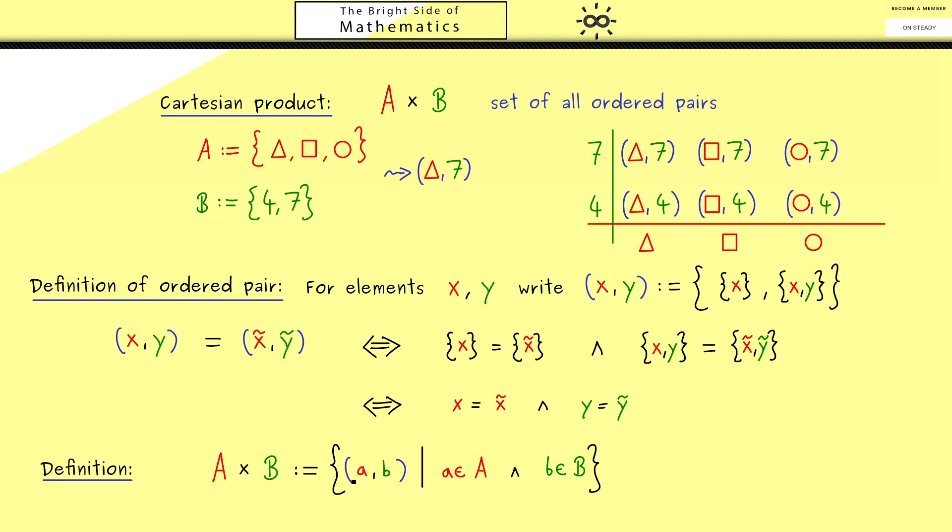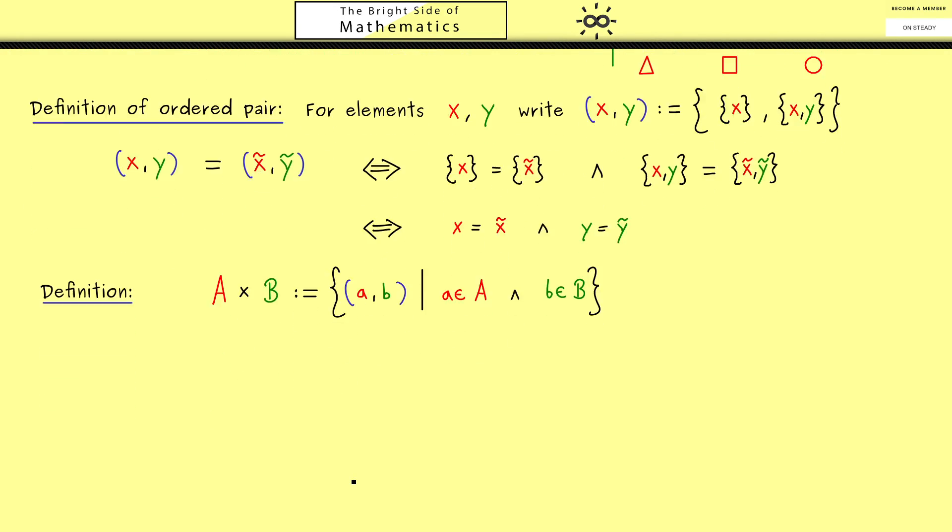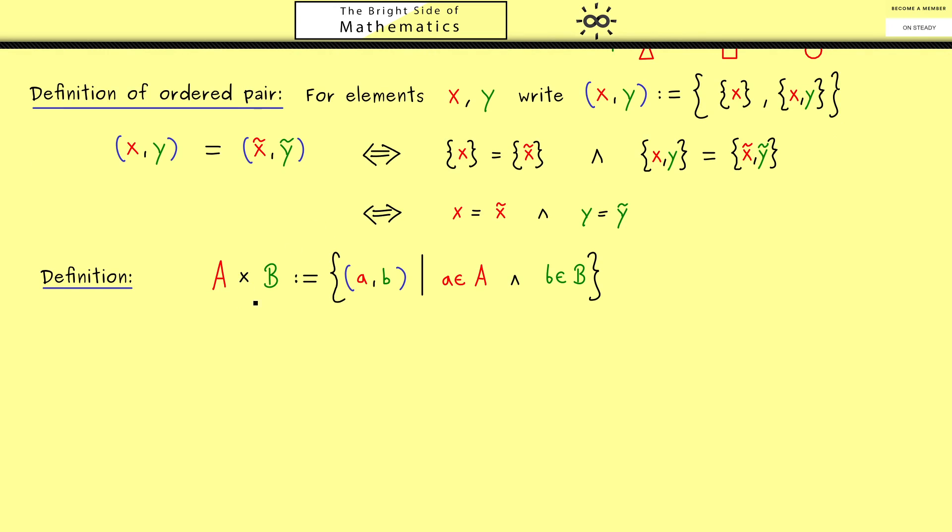With this knowledge we can do even more, because we can also consider subsets in the Cartesian product A times B. We can do the same as before and visualize the Cartesian product as a coordinate system as here. And then a subset would be just a collection of elements here in this plane. Now such a chosen subset encodes information about the relation between the two sets.